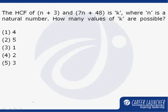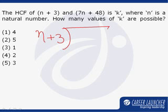So, if I go by the long division method, n plus 3, let us say this is 7n plus 48. Divide 7n plus 48 by n plus 3.